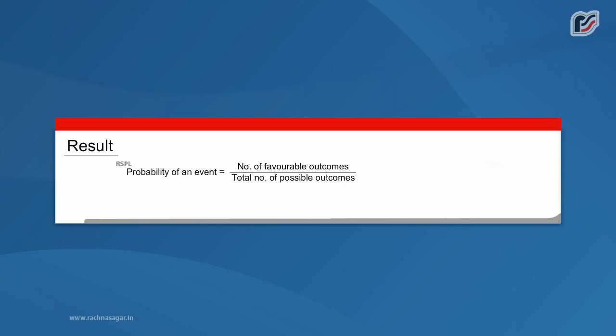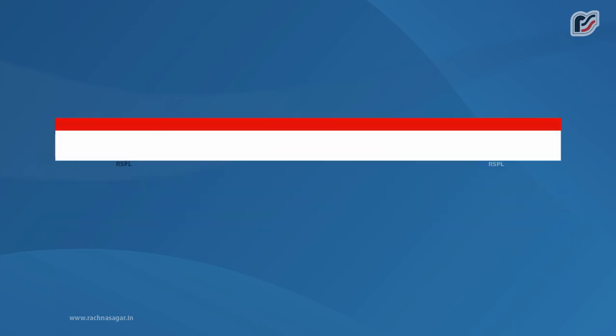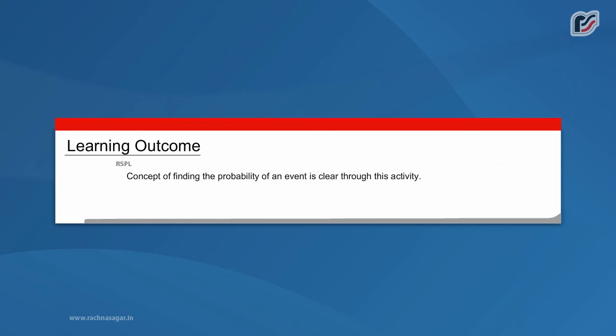Result: Probability of an event is equal to number of favorable outcomes by total number of possible outcomes. Learning outcome: Concept of finding the probability of an event is clear through this activity.